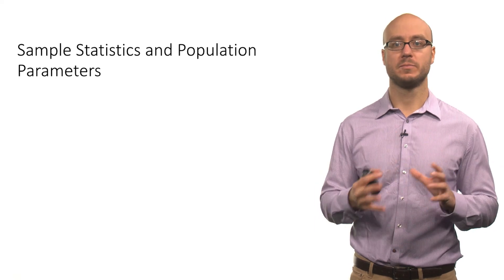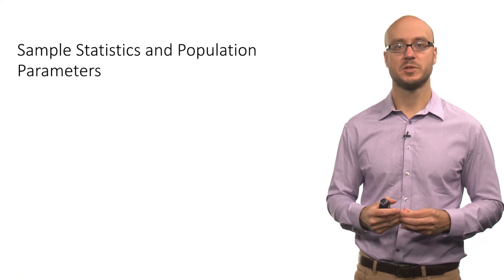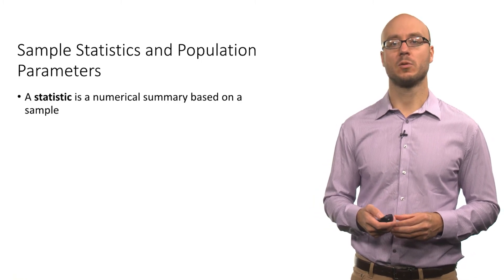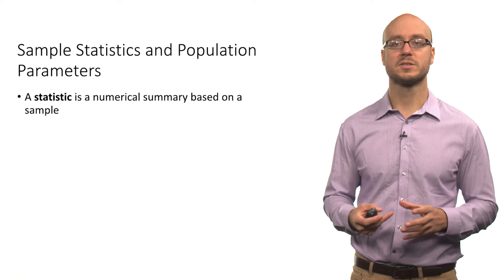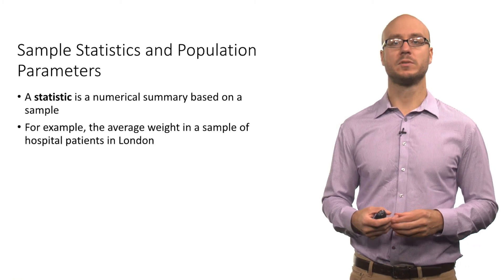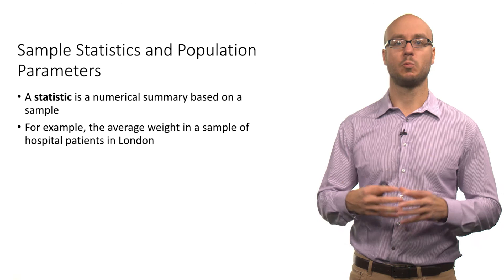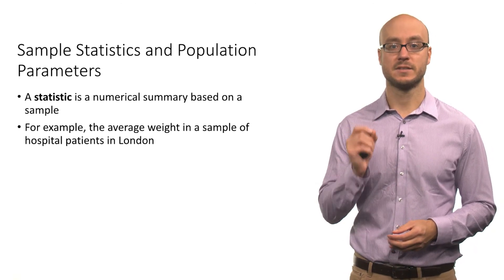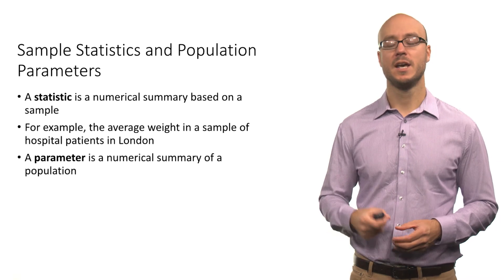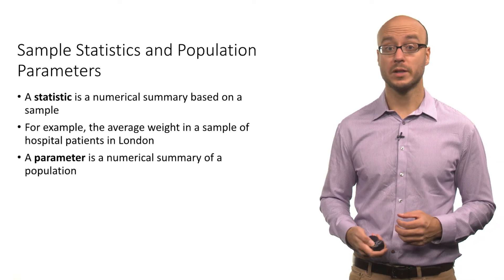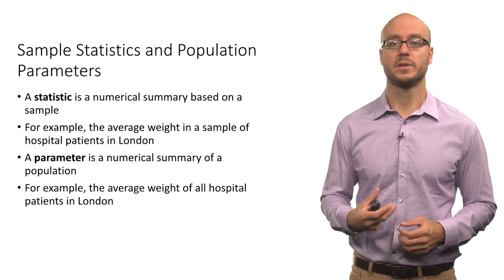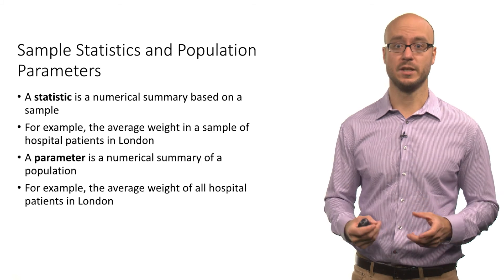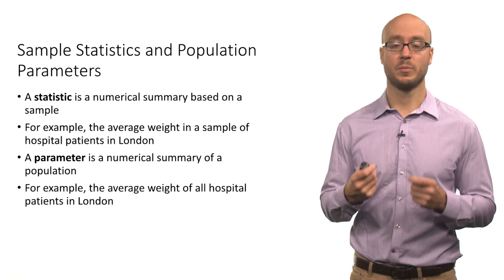When talking about samples and populations, we distinguish between sample statistics and population parameters. A sample statistic, or statistic for short, is a numerical summary based on a sample — for example, the average weight in a sample of hospital patients in London. A parameter is a numerical summary of a population — for example, the average weight of all hospital patients in London is a population parameter.